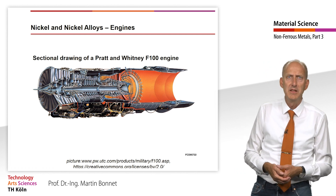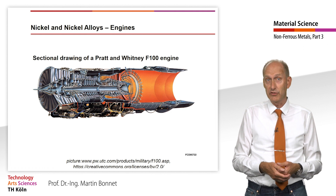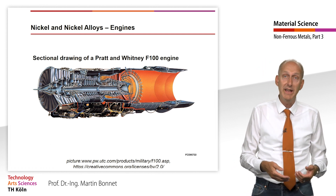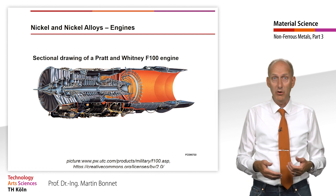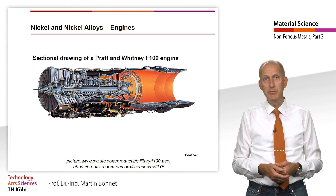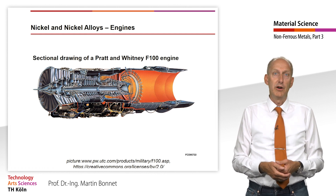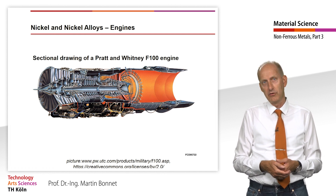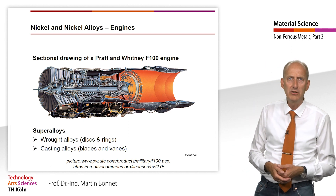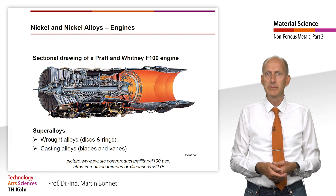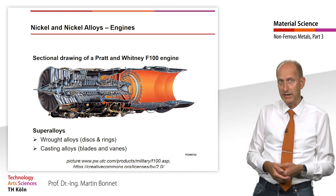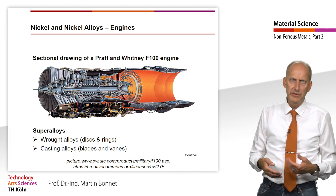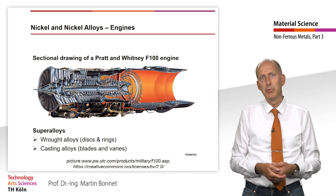The materials used in engine construction must be characterized by high specific strength and excellent reproducibility of mechanical properties. Both titanium and nickel alloys are therefore used. While titanium alloys are predominantly used for the front part of the engine, including the fan, because of their strength, nickel alloys with high temperature resistance are preferred for the hot rear parts. Two groups of alloys produced specifically for high-temperature applications are used for turbine parts — also referred to as superalloys.